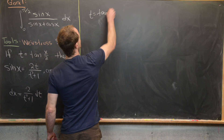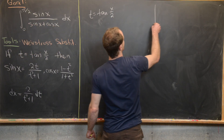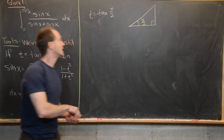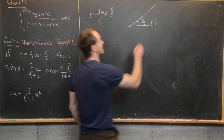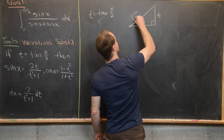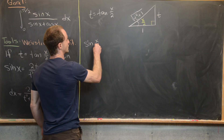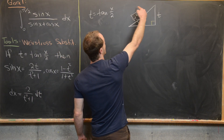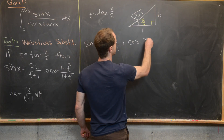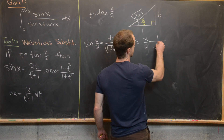If we set t equal to tangent of x over 2, we'll start by completing the triangle associated with this value of tangent. Draw a right triangle with this angle having measure x over 2. Since tangent is opposite over adjacent, label this length t and this length 1, then complete the triangle via the Pythagorean theorem — the hypotenuse is the square root of t squared plus 1. Then sine of x over 2 equals t over the square root of t squared plus 1, and cosine of x over 2 equals 1 over the square root of t squared plus 1.